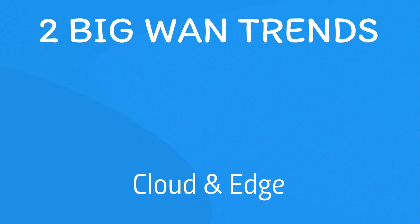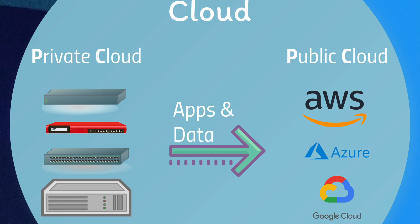There are two big WAN trends happening on a global scale: cloud and edge. From a cloud perspective, what we're seeing is a lot of activity happening from private cloud into the public cloud. Apps and data are moving into public cloud providers at the speed of light. It's happening globally because it's saving companies a ton of money, plus it's offering resiliency regionally and globally, and protects against disasters. Companies can turn CAPEX into OPEX and utilize services on a pay-as-you-go model instead of paying everything upfront — a significant financial engineering opportunity.